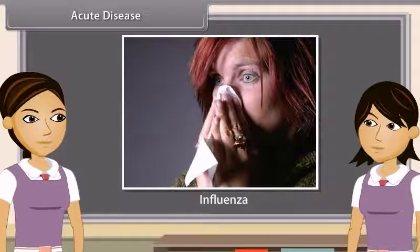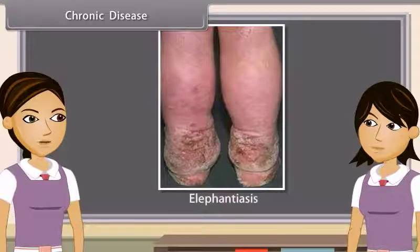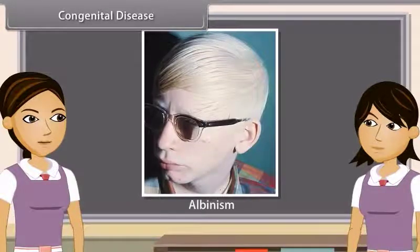Chronic diseases are those diseases whose symptoms last for months or years. Examples include elephantiasis, tuberculosis, etc. Congenital diseases are those which are present since birth. Examples include albinism and hemophilia.